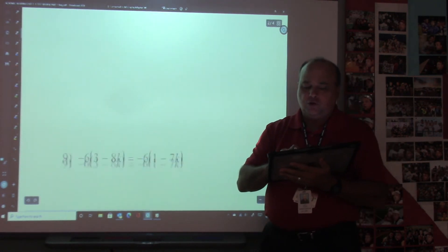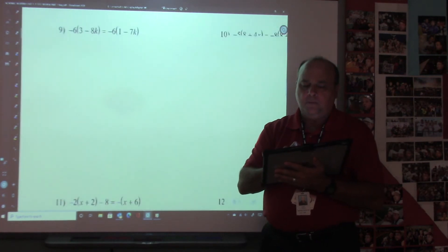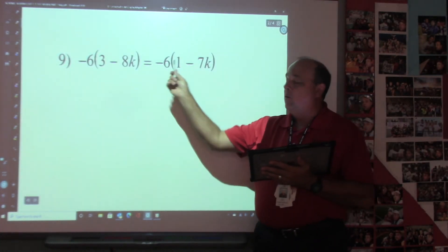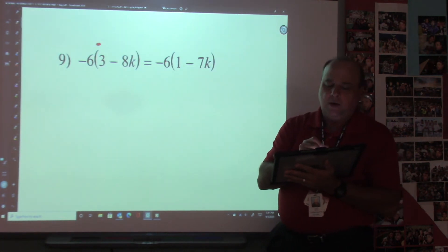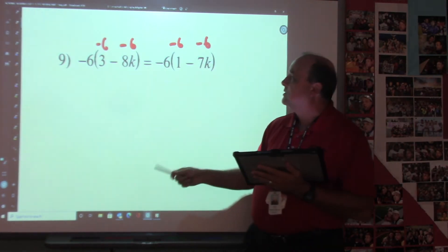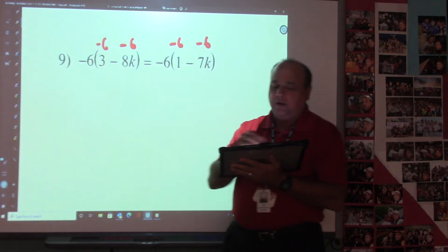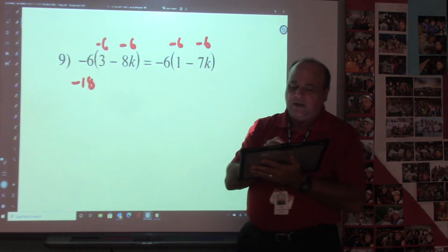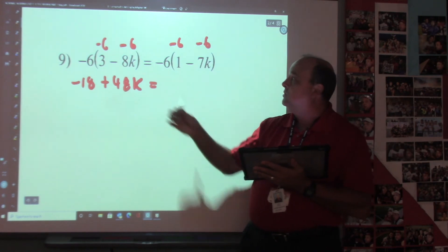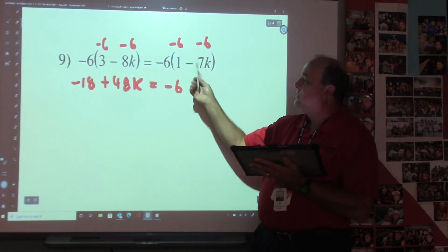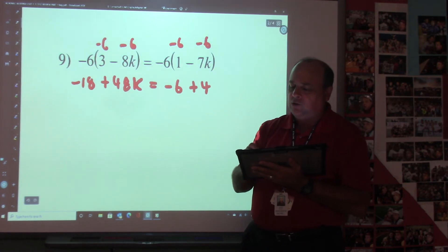Let's go to number 9. On number 9, we have to distribute on both sides. So we're going to put -6, -6, and -6, and -6. So our bluebell trucks are -6. So -6 times 3 is -18, and then a -6 times a -8 is a +48k equals a -6 times 1 is a -6, and a -6 times a -7 is a +42k.